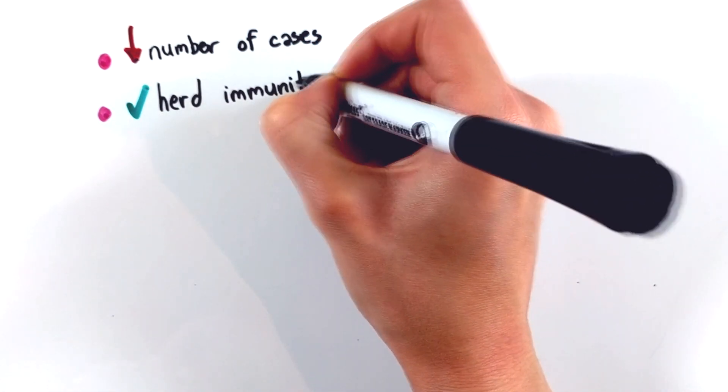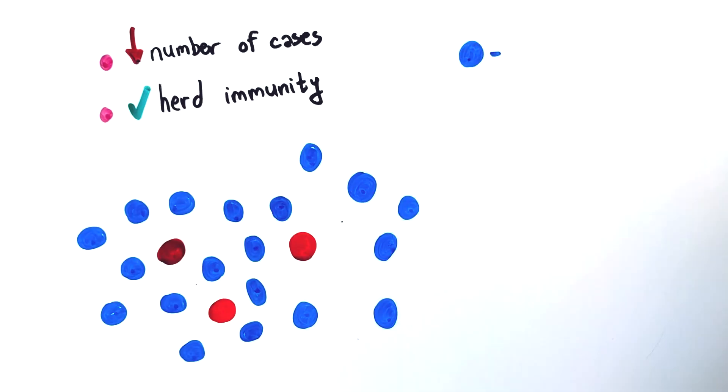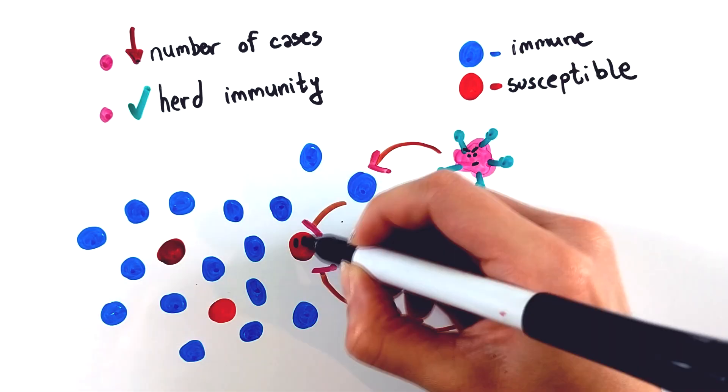The outbreak is brought under control when there are no more cases reported or herd immunity has been acquired. When some people become immune, they can stop the disease spread and therefore protect others in a population, which is also called herd immunity.